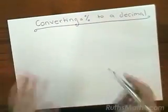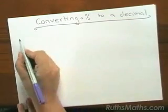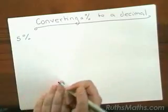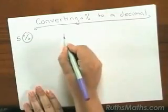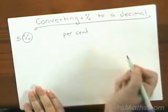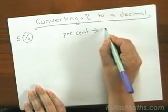Now we're going to look at converting a percentage to a decimal. Let's start off with this example. We have 5%. Now the thing with a percentage symbol is that you need to remember that percent means divide by 100.